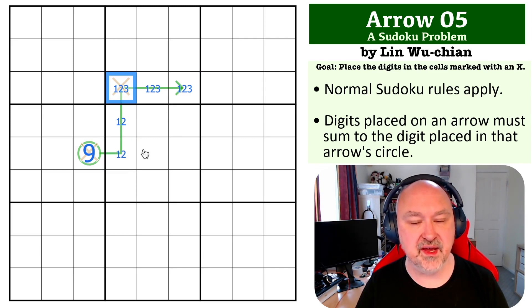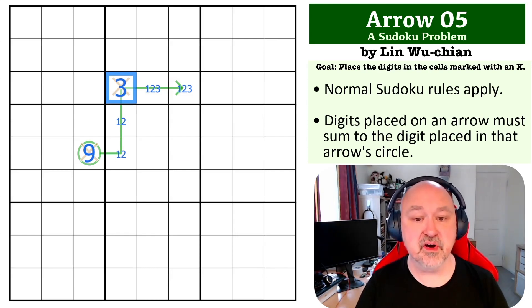But we've got a 1, 2 pair looking at that, so it cannot be a 1 or a 2. So that becomes a 3. And we are able to very quickly figure out that this has to be a 3, and this has to be a 9 with an arrow shaped like that.